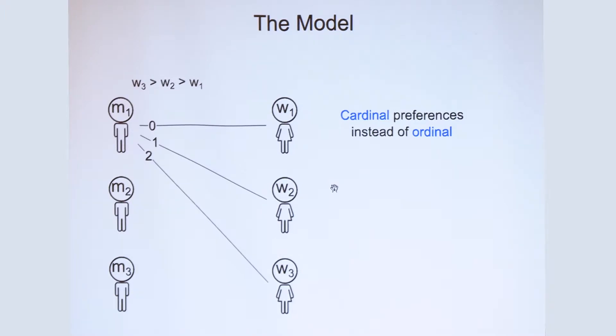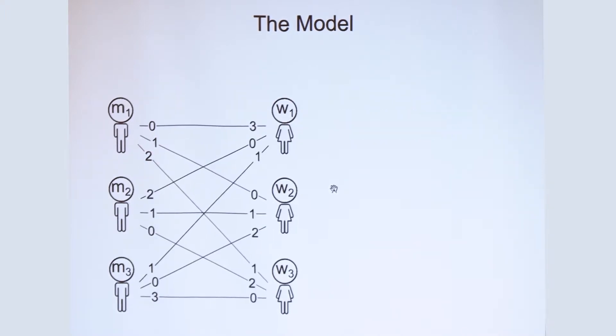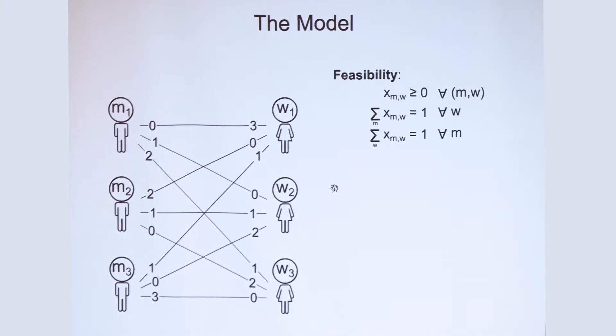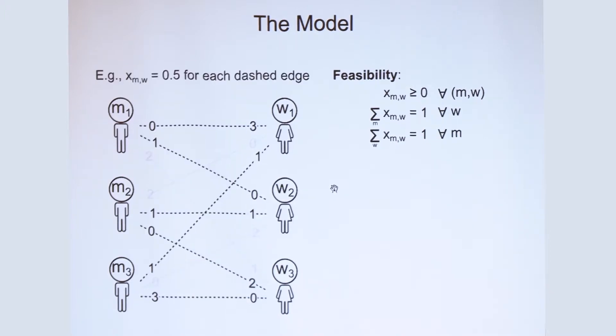Okay, so just to be more concrete, we once again have these two sets of agents, and instead of ordinal preferences, we now have these numbers or valuations. So for example, M1 values W3 at two, W2 at one, and W1 at zero. And likewise for all the other agents. A fractional matching is an object that satisfies these feasibility constraints. So for example, think of a matching that puts a mass of 0.5 on all these dashed edges. This is a valid fractional matching because it satisfies non-negativity and it uses up one matching mass of every agent.